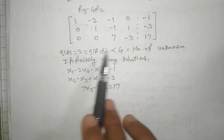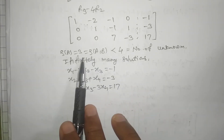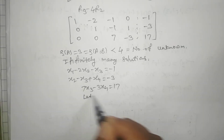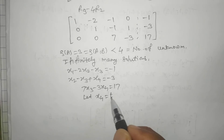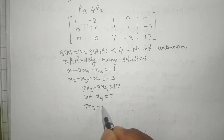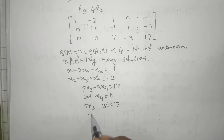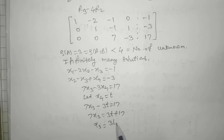The difference between the rank and the number of unknowns is 1, so we choose one free parameter. Let x4 equal t. Substituting into the third equation: 7x3 minus 3t equals 17, so x3 equals (3t plus 17) upon 7.